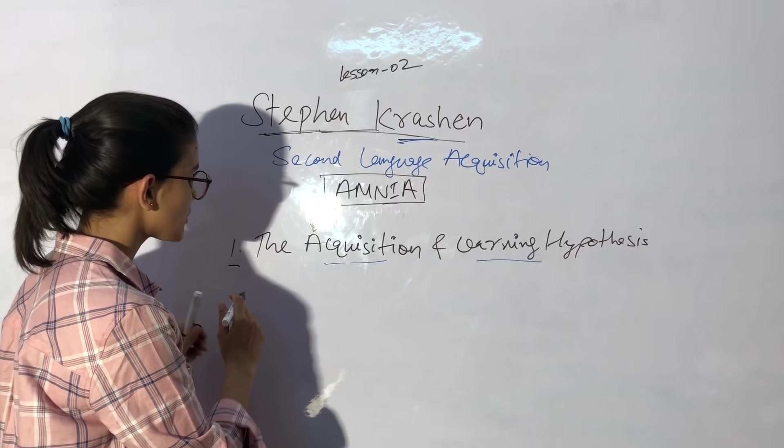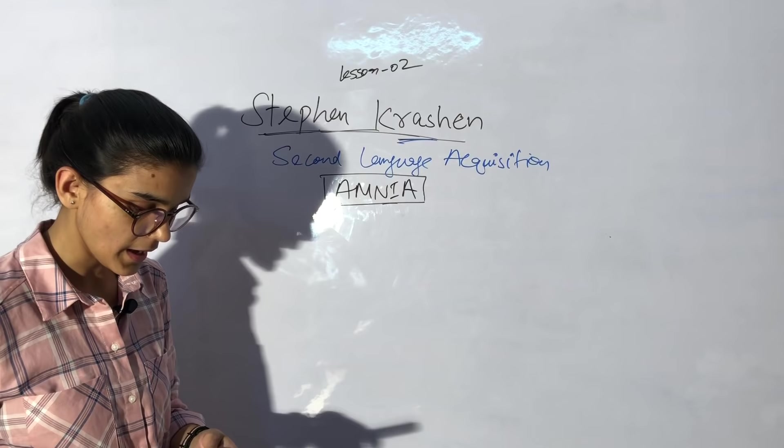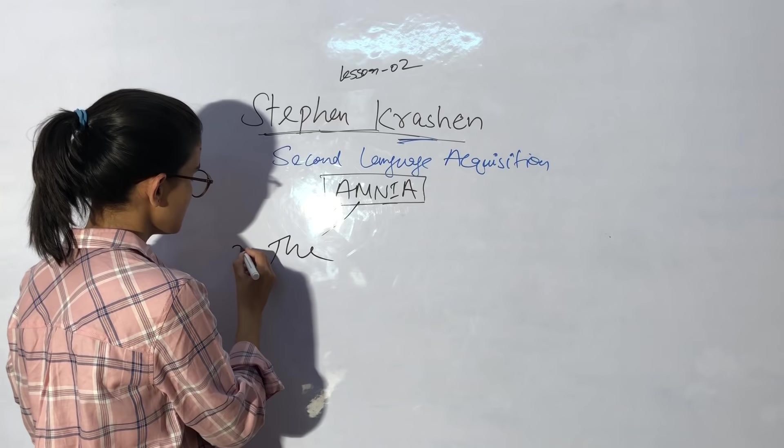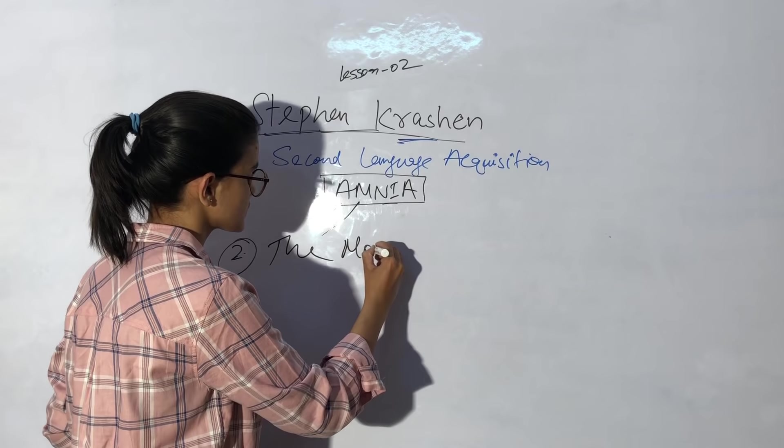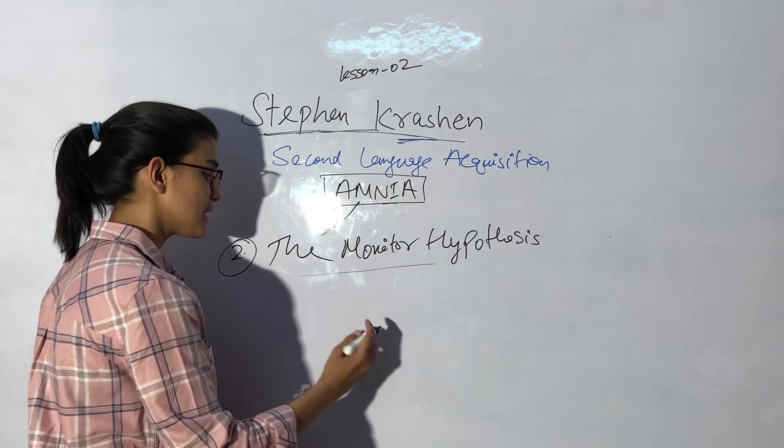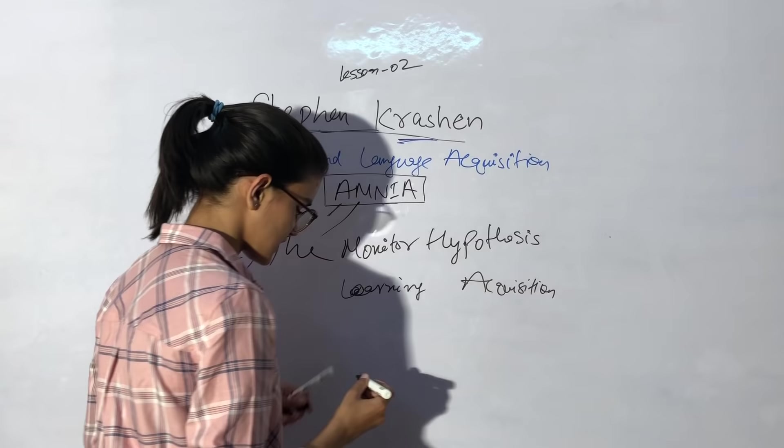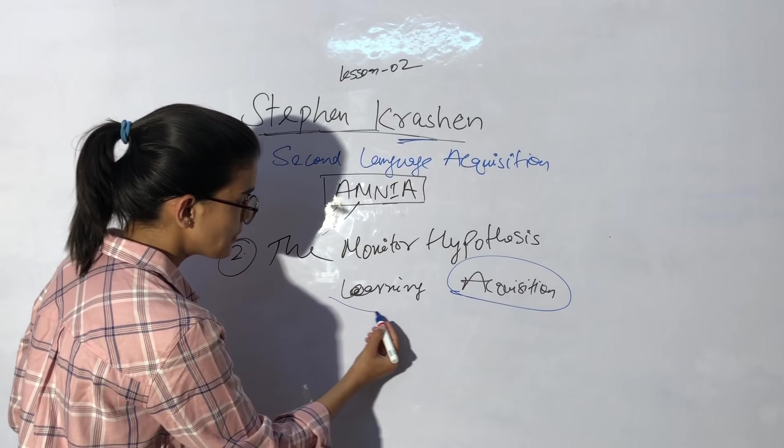Next point - this was a basic point to understand the theory. The second point is M, which is the monitor hypothesis. Now we studied acquisition and learning hypothesis, now we will study the monitor hypothesis. It is a practical theory.